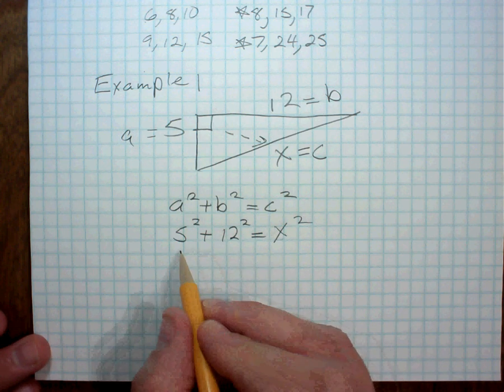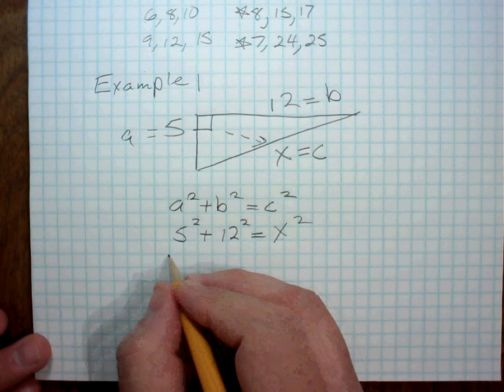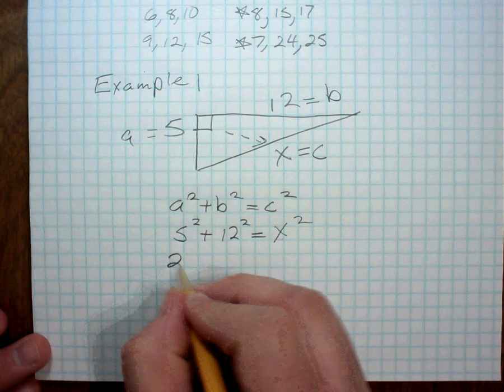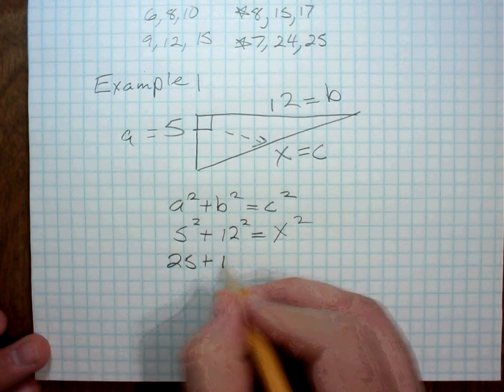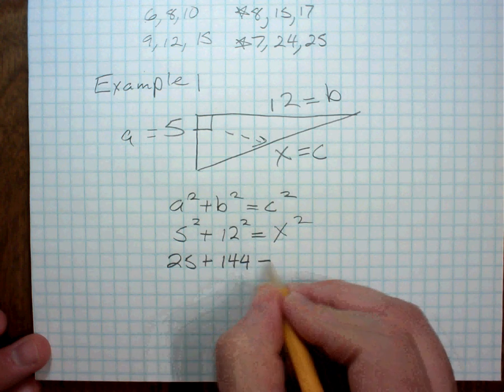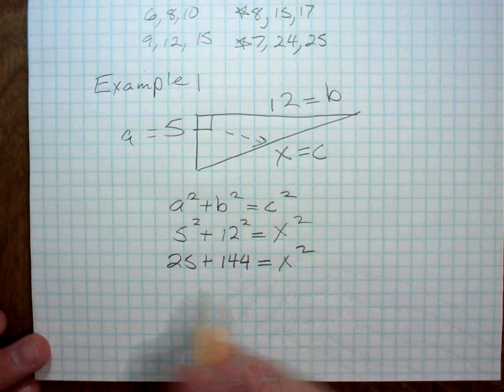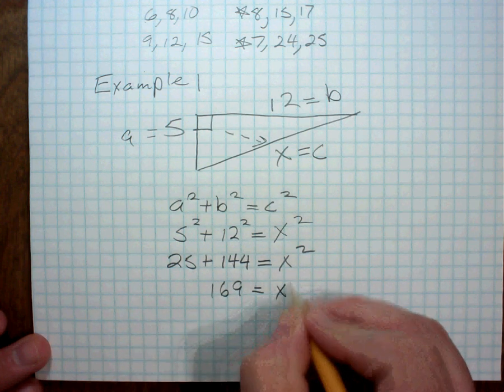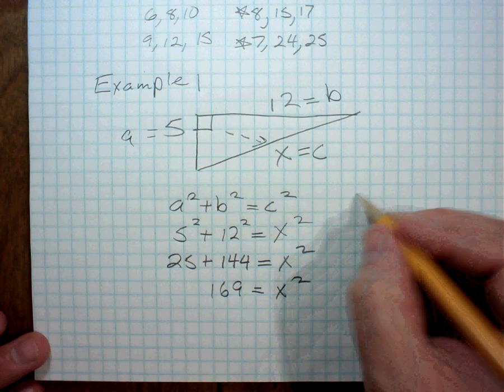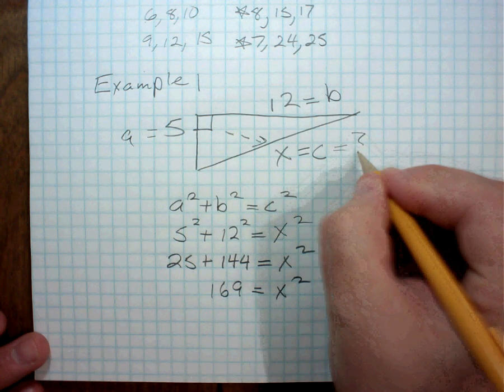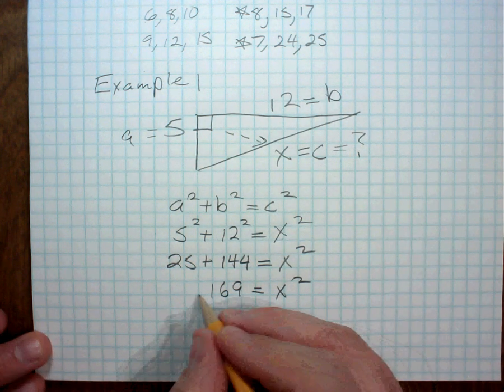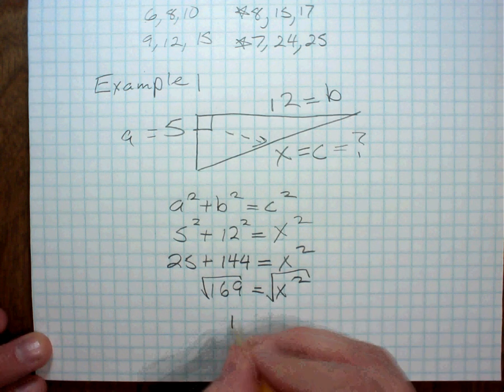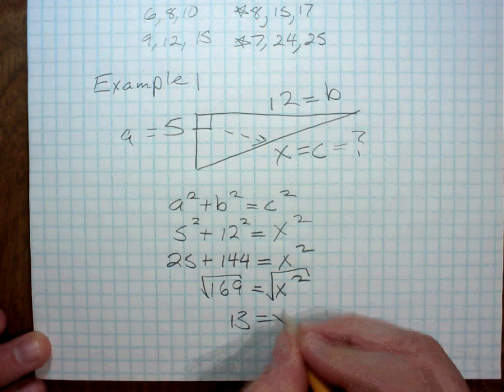So I'm going to multiply this out. I've got 5 times 5 is 25, 12 times 12 is 144, and then I just leave this as X squared. When I add those up, I get 169, and that equals X squared, but I want to know what X is, right? So I need to take the square root of both sides. That's how you undo a square, and I get 13 equals X.